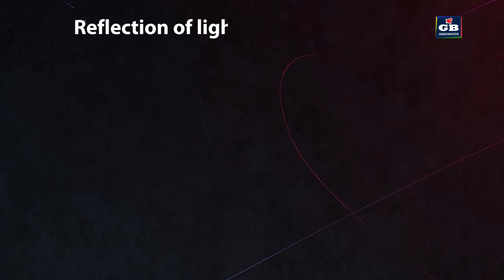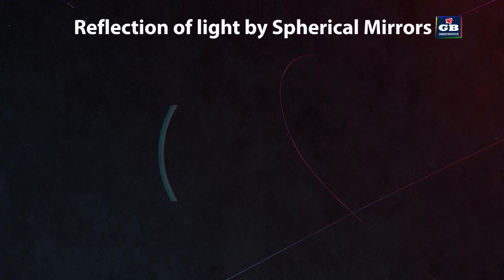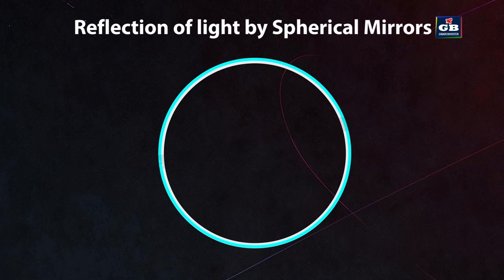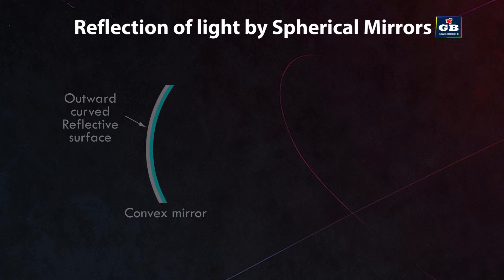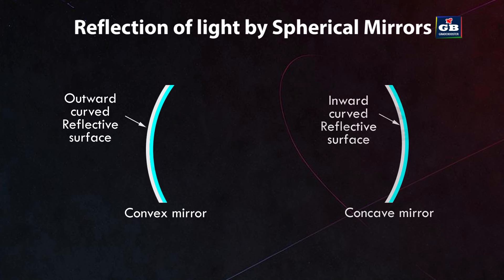Let us understand the reflection of light by spherical mirrors. A spherical mirror is a curved mirror forming part of a sphere. Spherical mirrors are of two types: convex mirrors, which have an outward curved reflective surface, and concave mirrors, which have an inward curved reflective surface.